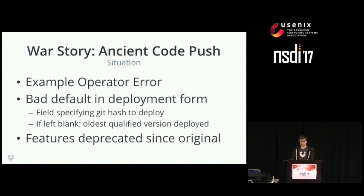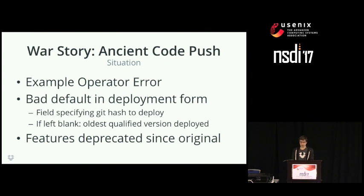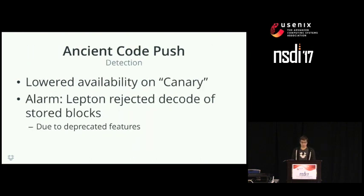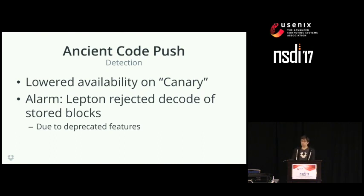On December 12, 2016, we had an operator error incident. There was a web form field specifying which qualified version of Lepton to deploy to production machines, but it defaulted to the oldest qualified version from almost a year prior. We didn't have proper directions in our playbook to fill in the field, so any employee who deployed with the field left blank — intending to deploy the newest version, which was quite reasonable — would instead push the old version. Once deployed to a small set of canary machines, availability started to go down, and Lepton decodes started rejecting files with deprecated features on other machines. This exposed a flaw: we had no procedure to remove qualification from older deprecated versions of Lepton.